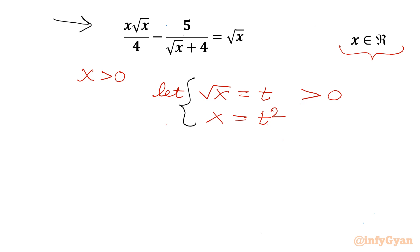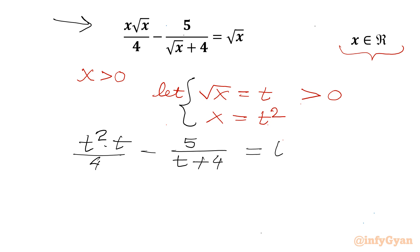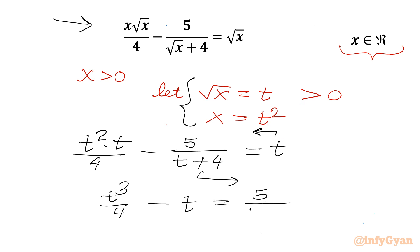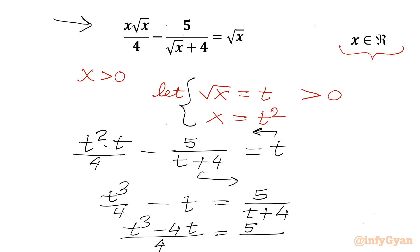Now I will substitute both values √x and x into our equation. So the equation will become t² · t divided by 4 minus 5 over (t + 4) equal to t. Now I will take LCM, so (t³ − 4t) over 4 equals 5 over (t + 4).